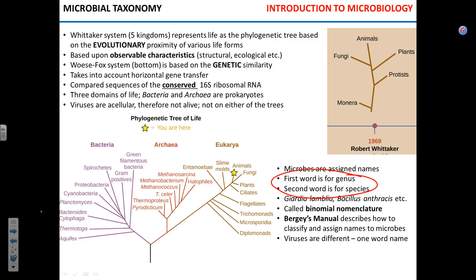If you go to bigger animals, like tiger, it would be Panthera tigris. Panthera is the genus. Tiger is Panthera tigris, lion is Panthera leo, leopard is Panthera pardus — different species belonging to the same genus. You can cross a lion and a tiger and produce a liger, which is infertile — a distinguishing feature of cross-species chimeras.